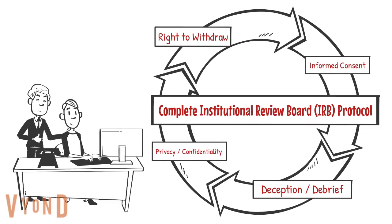The IRB looks for an informed consent document that all study participants read and sign before participating. In psychology, some studies cannot tell participants about the purpose of the study because not knowing is important for the science. For example, Stanley Milgram studied compliance to commands from authority figures by convincing people a man in a lab coat was telling them to administer a shock to someone in another room — when really it was a recorded actor. In cases like Milgram's where deception is needed, the experimenter must share the purpose of the study with participants as soon as the study is concluded.